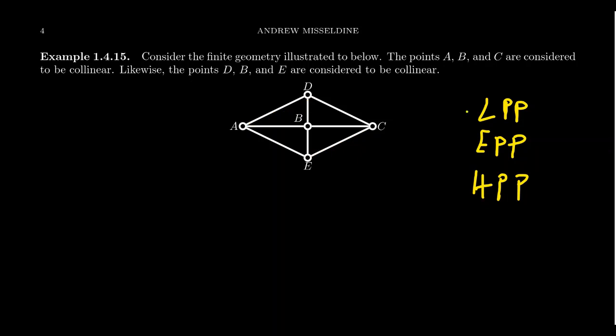So this rules out the elliptic parallel postulate. I also want to show you that that same counter example basically also kills the hyperbolic parallel postulate because if I take this line AD and I take the point E right here, there does exist a parallel line to the line AD that passes through E, but there's not another one.